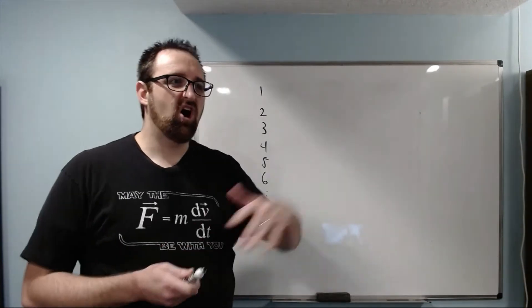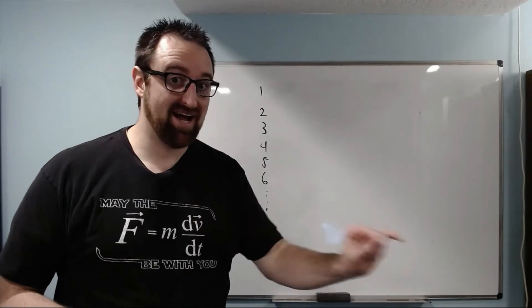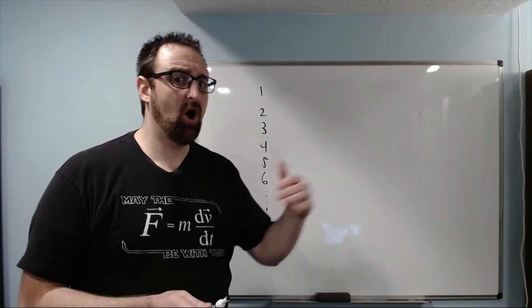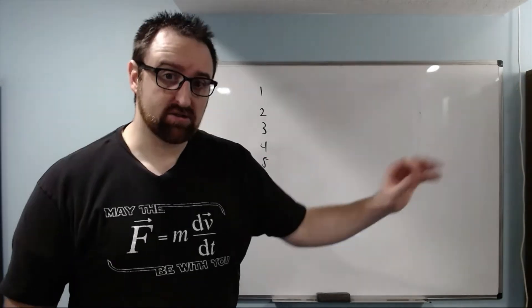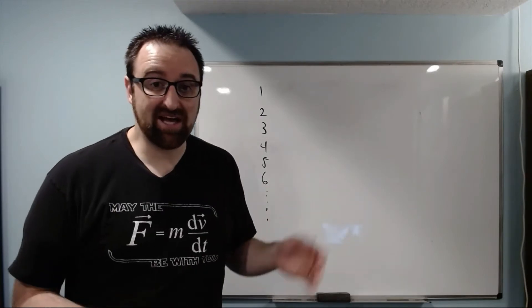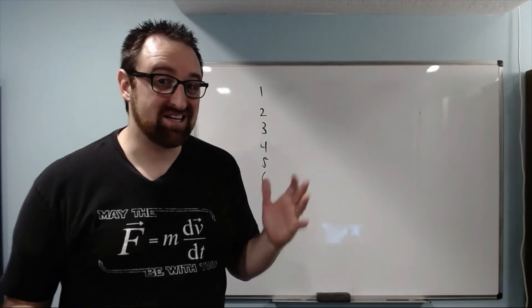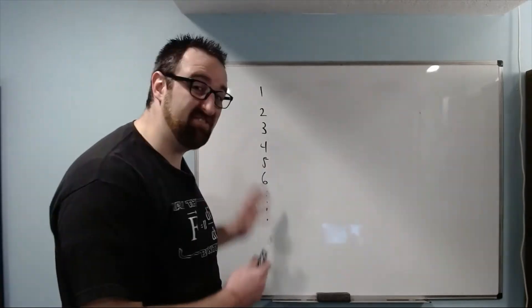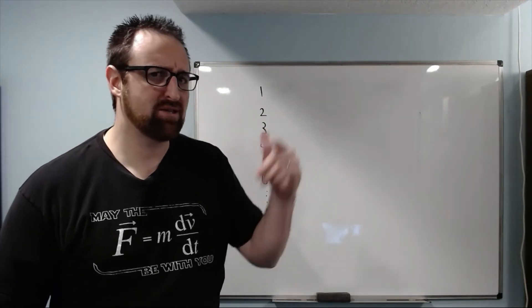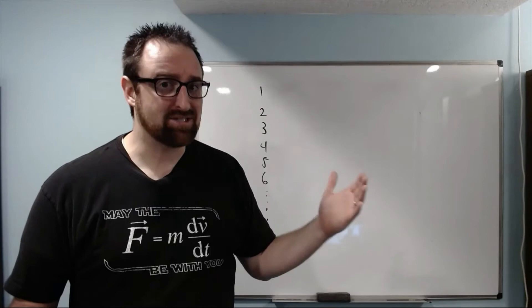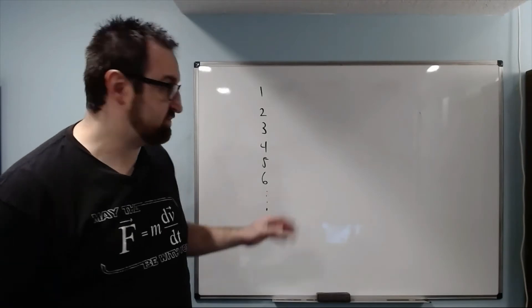A googol is one with a hundred zeros after it. To give you an idea of the size — a billion is one with nine zeros after it. A googolplex is one with a googol zeros after it. The problem with numbers like that is, while they're insanely big and just totally beyond our comprehension, they're actually not even close to as big as infinity. You can do ten to the googolplex power and it's even bigger, but it's still no closer to infinity.